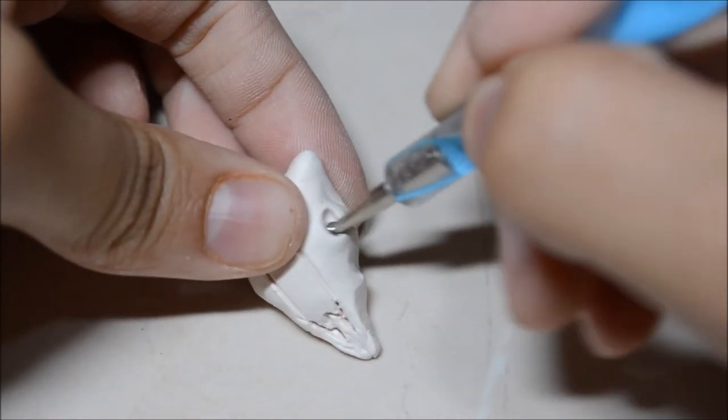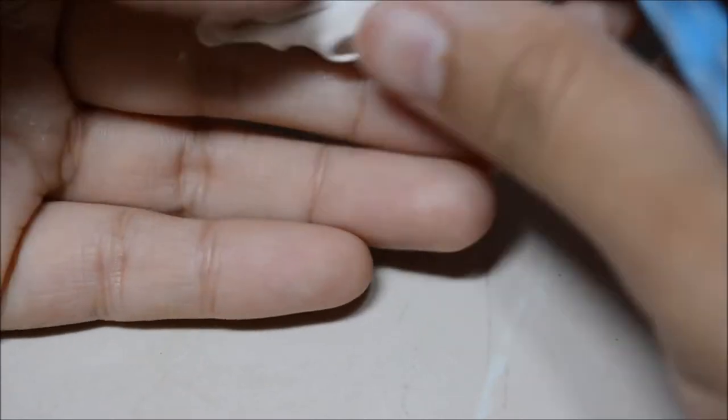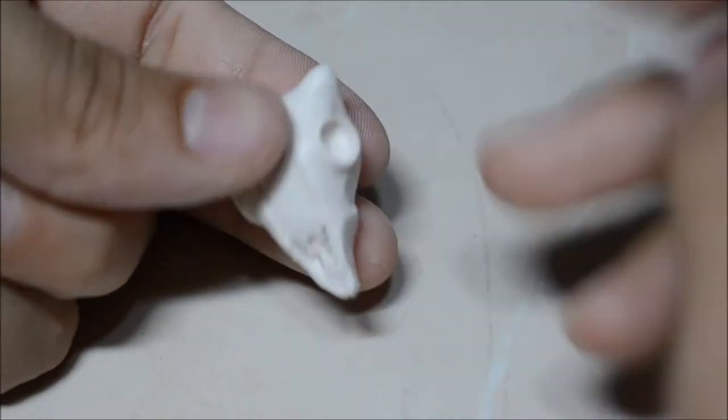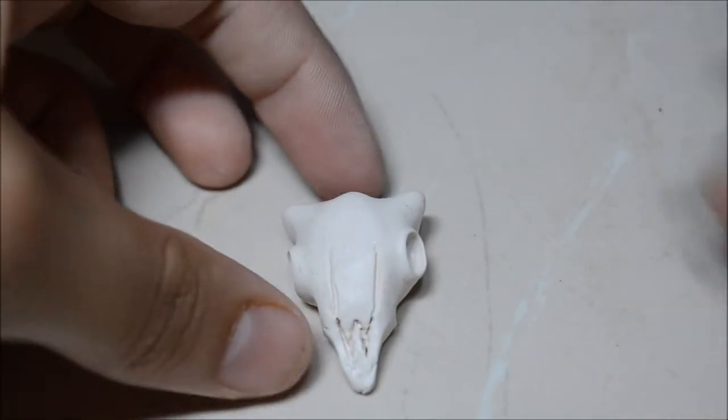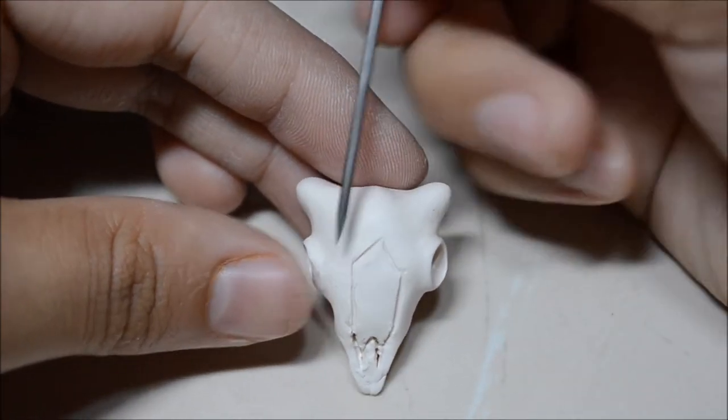And then I just kind of mark it more with the dotting tool, just making sure it's deep enough. Now with the dotting tool, I just take it and literally just jiggle it around until it makes a bigger hole, like so. I'm just drying the rest of the lines.